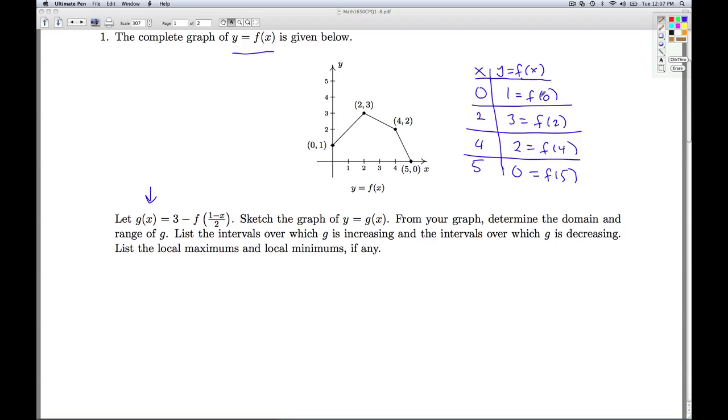So in other words, for the values 0, 2, 4, and 5, if those are the inputs to f, I know what the outputs are. So what I need to do is look at what's inside the function here, f, and set that equal to each of these inputs here. So that's what I'm going to do in this step. 1 minus x over 2 equals 0, 1 minus x over 2 equals 2, 1 minus x over 2 equals 4, and 1 minus x over 2 equals 5. So I'm setting what's inside the function equal to what's inside the original function here, 0, 2, 4, and 5.